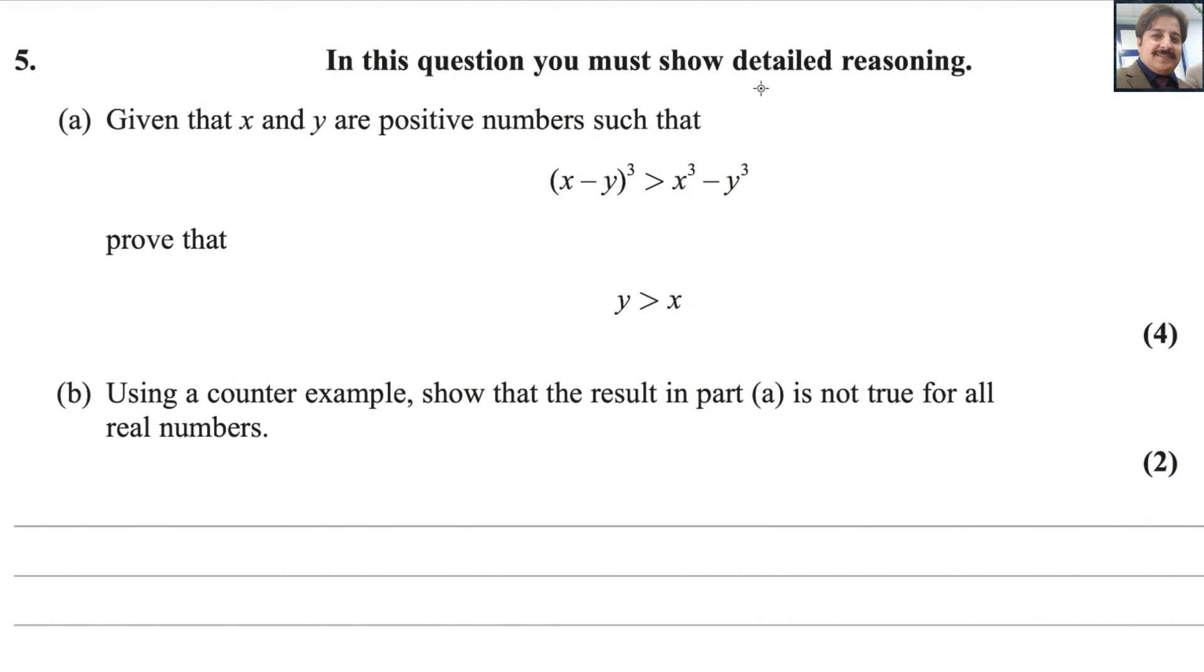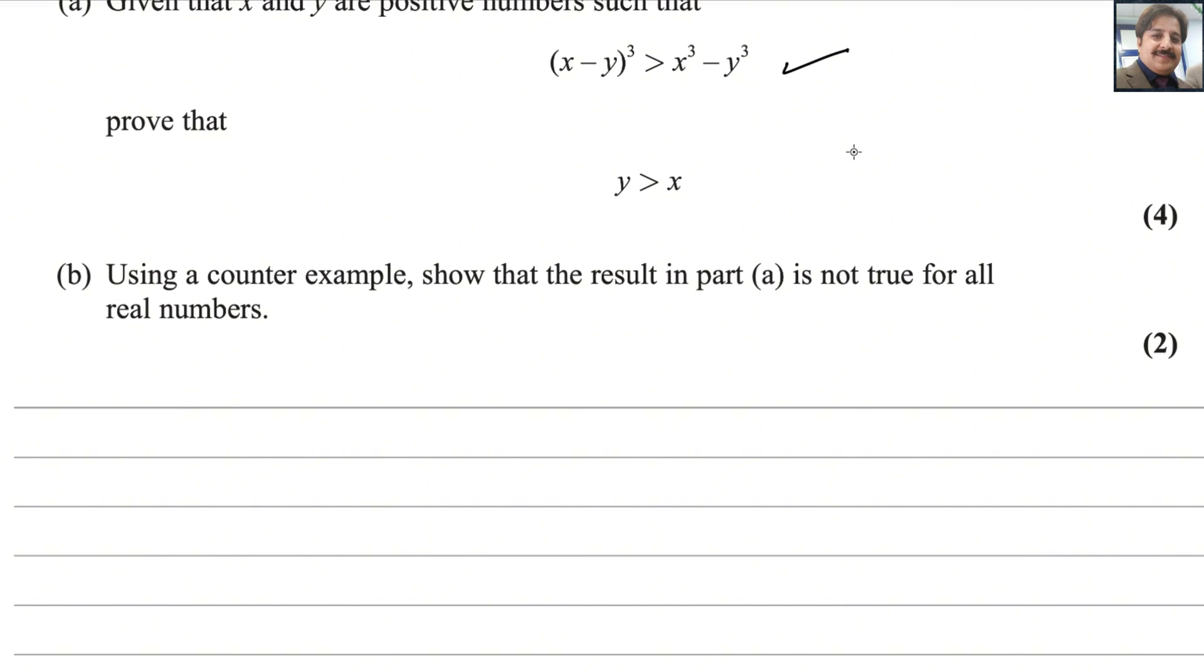In this question you must show detailed reasoning. Let me start from here. We will expand (x-y)³ is greater than x³ - y³. We can expand the left-hand side by using the formula: (x-y)³ equals x³ - 3x²y + 3xy² - y³. You should memorize this formula; if you don't know it, you can use the binomial theorem to expand.